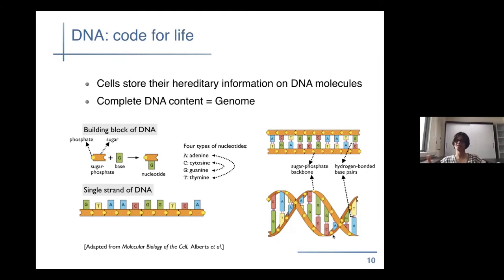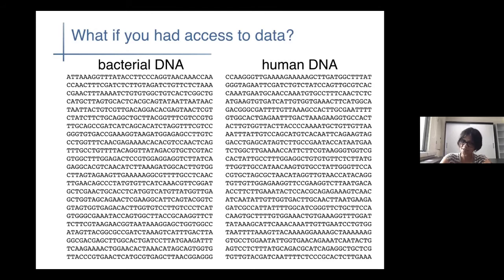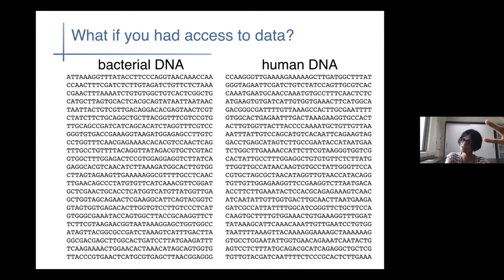Just like we have DNA, bacteria has its own DNA. So now we're slightly closer to understanding and trying to solve this problem. What if you had access to already sequenced bacterial DNA and human DNA — can you do something? Can you look at the proportions of those letters and try to come up with a rule that you can use later when a new unlabeled DNA strand is given to you? One way of thinking about it is using probability — probabilistic models.